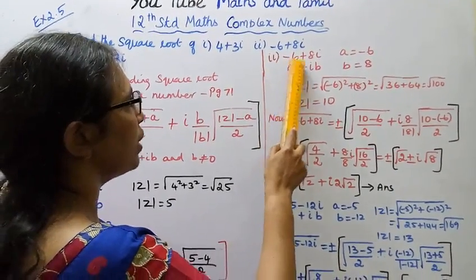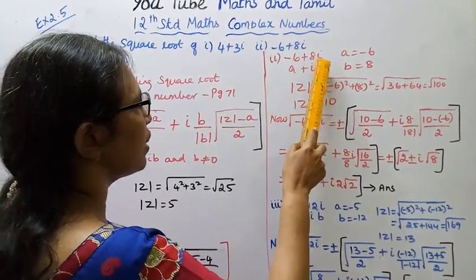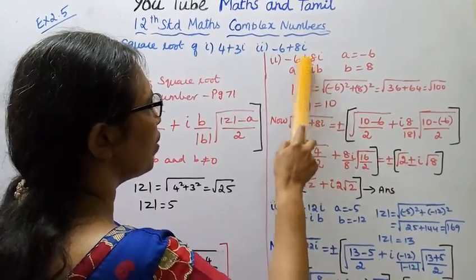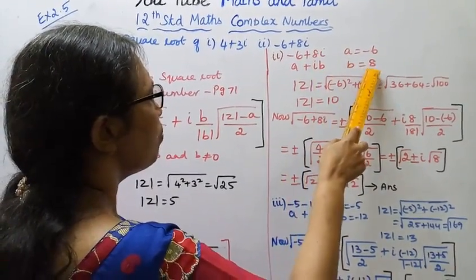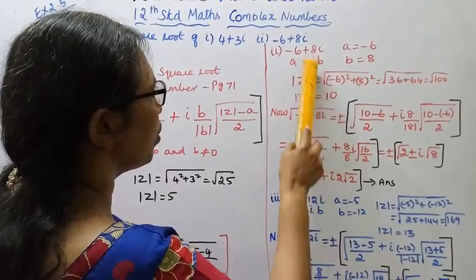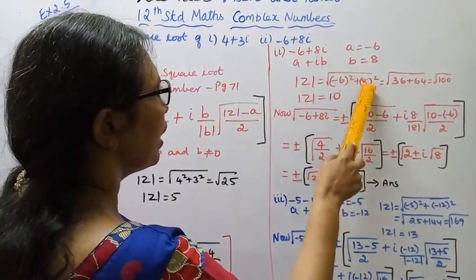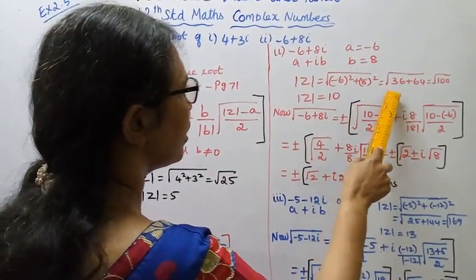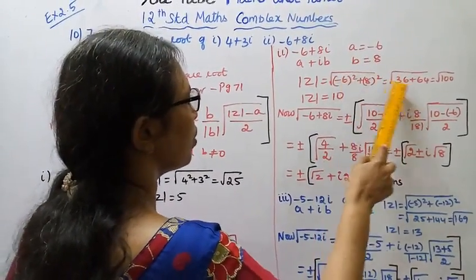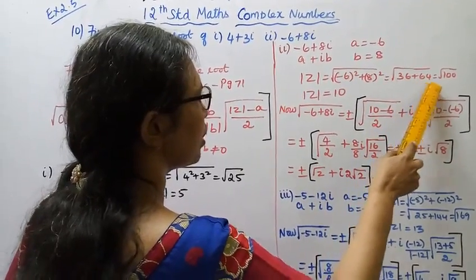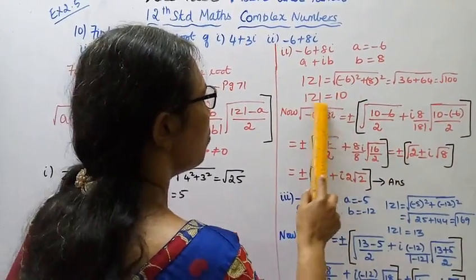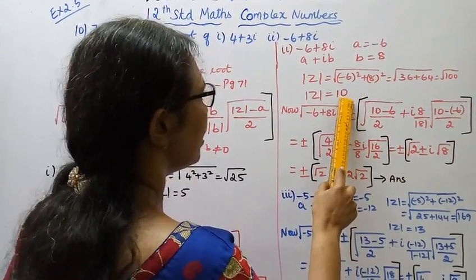Second subdivision: minus 6 plus 8i. So a equals minus 6, b equals plus 8. Now mod z equals root of (minus 6 squared plus 8 squared), that is root of (36 plus 64), equal to root of 100. Mod z equals 10.